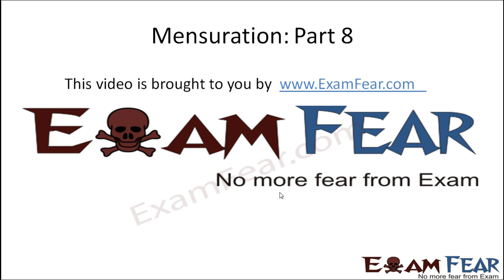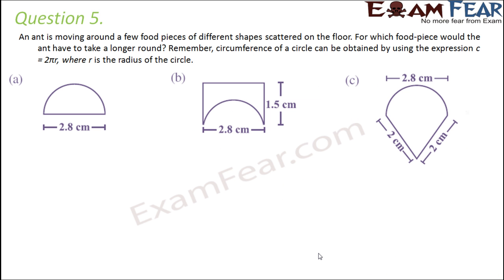Hello friends, this video on mensuration part 8 is brought to you by examfear.com — no more fear from exam. Question number 5: an ant is moving around a few food pieces of different shapes scattered on the floor. For which food piece would the ant have to take a longer round? Remember, the circumference of a circle can be obtained by using the expression C = 2πr.